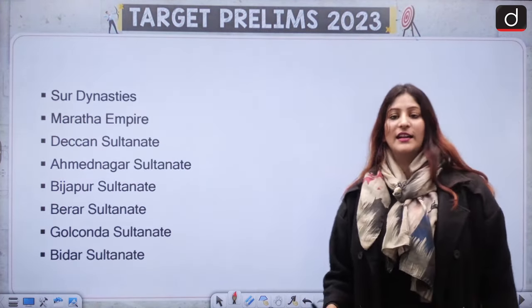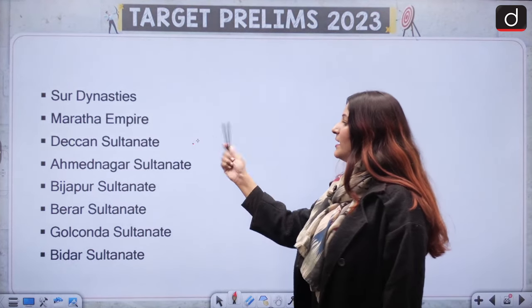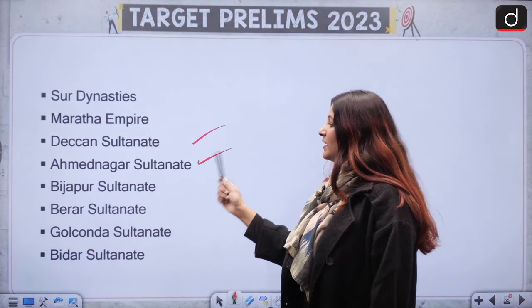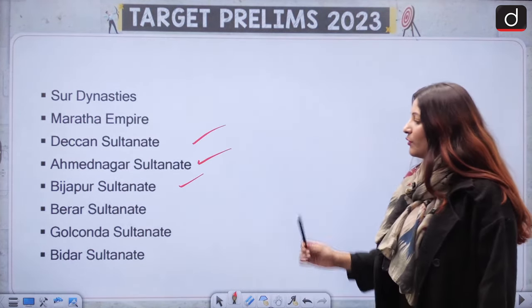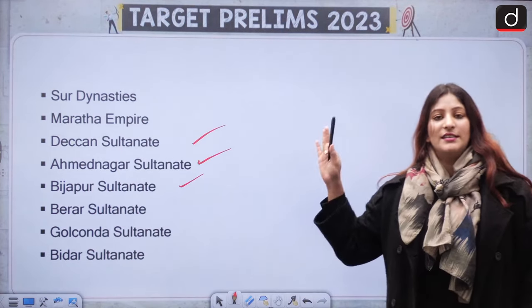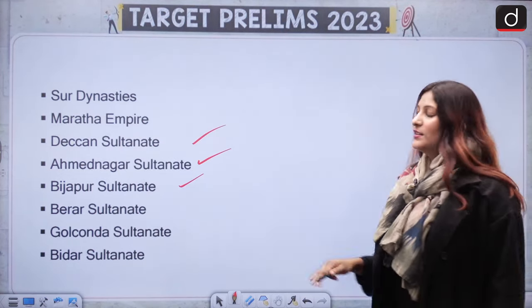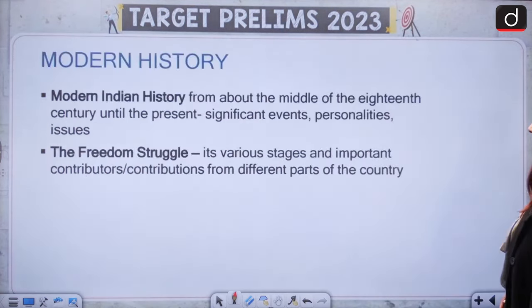Sur dynasty, Maratha Empire, Deccan Sultanates — Ahmednagar, Bijapur, Berar, Golkonda, Bidar. These are the central and southern Indian dynasties you have to remember.